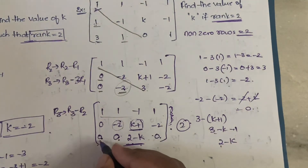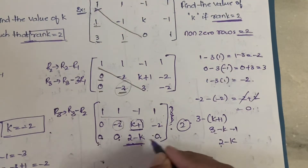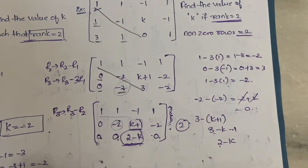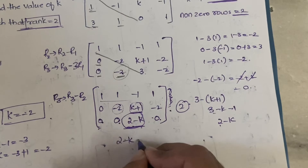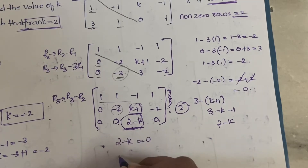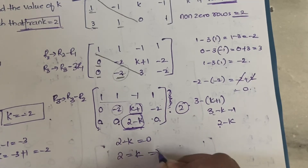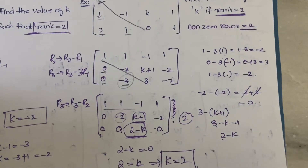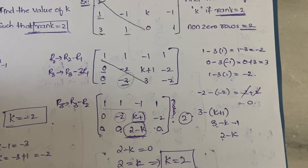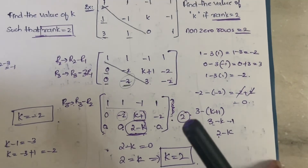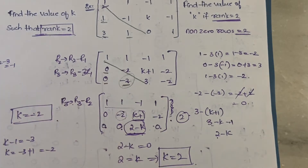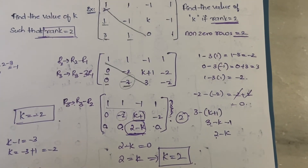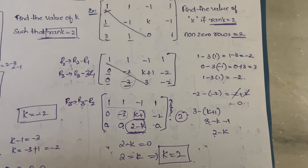Since there are already three zeros and it is very easy to convert 2 minus k into zero, we set 2 minus k = 0, giving k = 2. So the unknown value k is equal to 2. This is how you solve for unknown values using the rank condition.